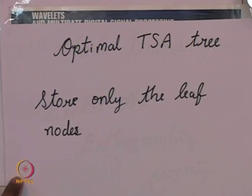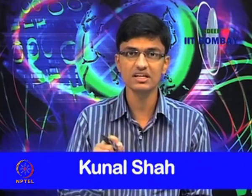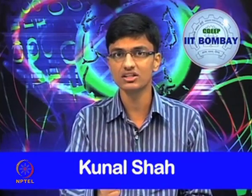The optimal TSA tree stores only the leaf nodes. The total size of all leaf nodes equals the size of the original signal, so storage is not increased. By storing only leaf nodes, minimum cost and minimum storage are incurred. Adding one non-leaf node can improve performance, but the improvement is only marginal - so there is no point storing any nodes other than the leaf nodes.